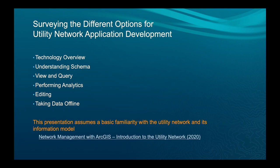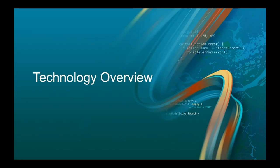We're going to start with a technology overview and then talk through various aspects of the APIs. For desktop ArcGIS Pro, we have the Pro SDK that allows you to build utilities with C#. On the server side, we have the Enterprise SDK. On the web side, we have the Maps SDK for JavaScript. And on the mobile side, we have Maps SDK for Native Apps.